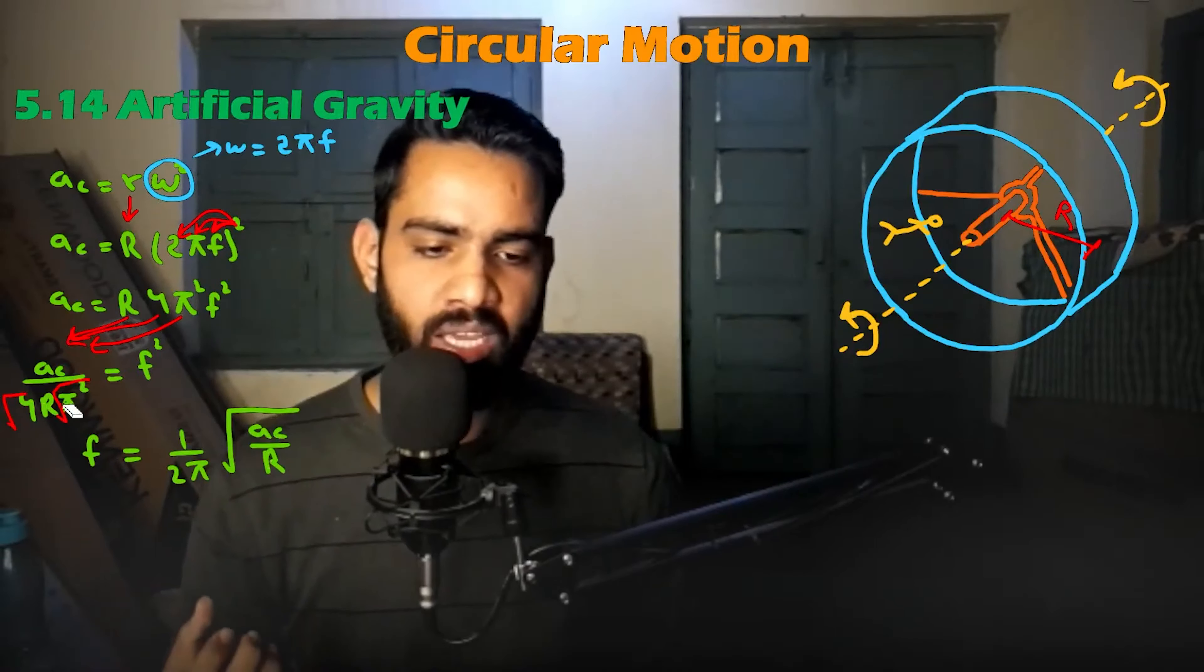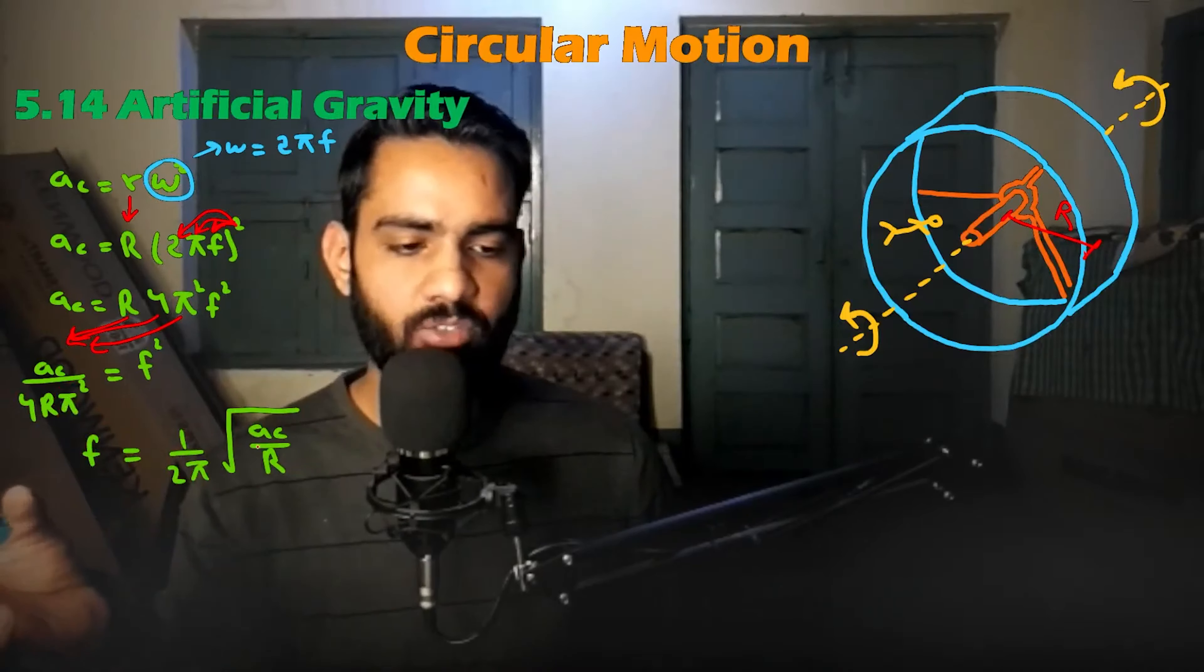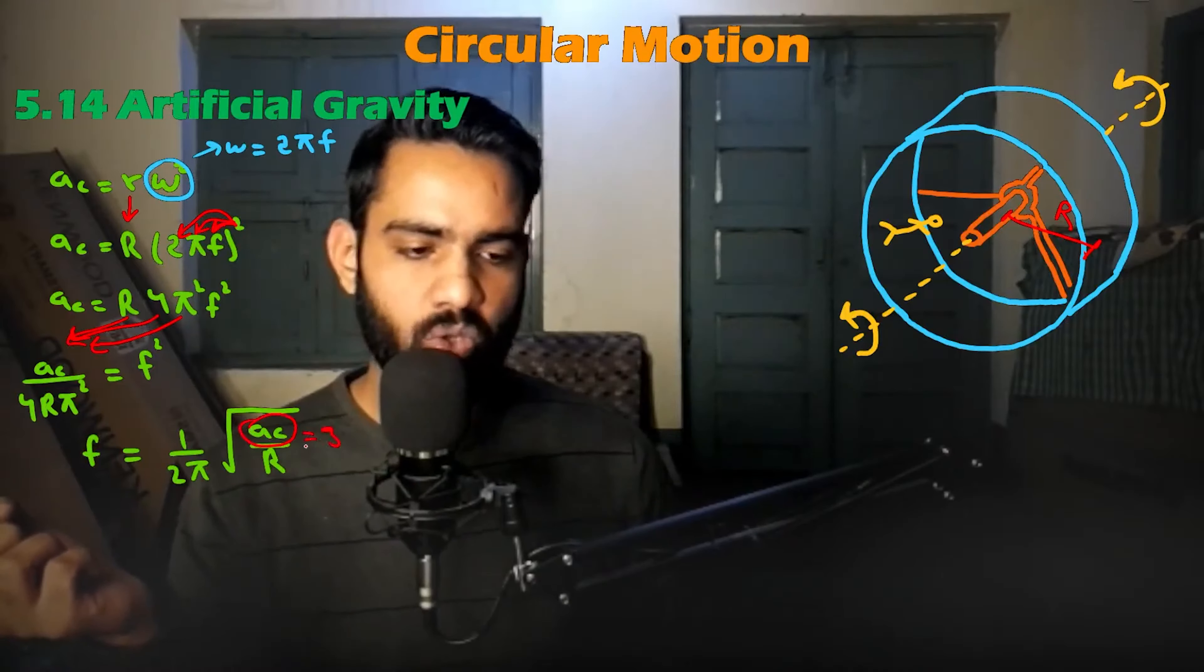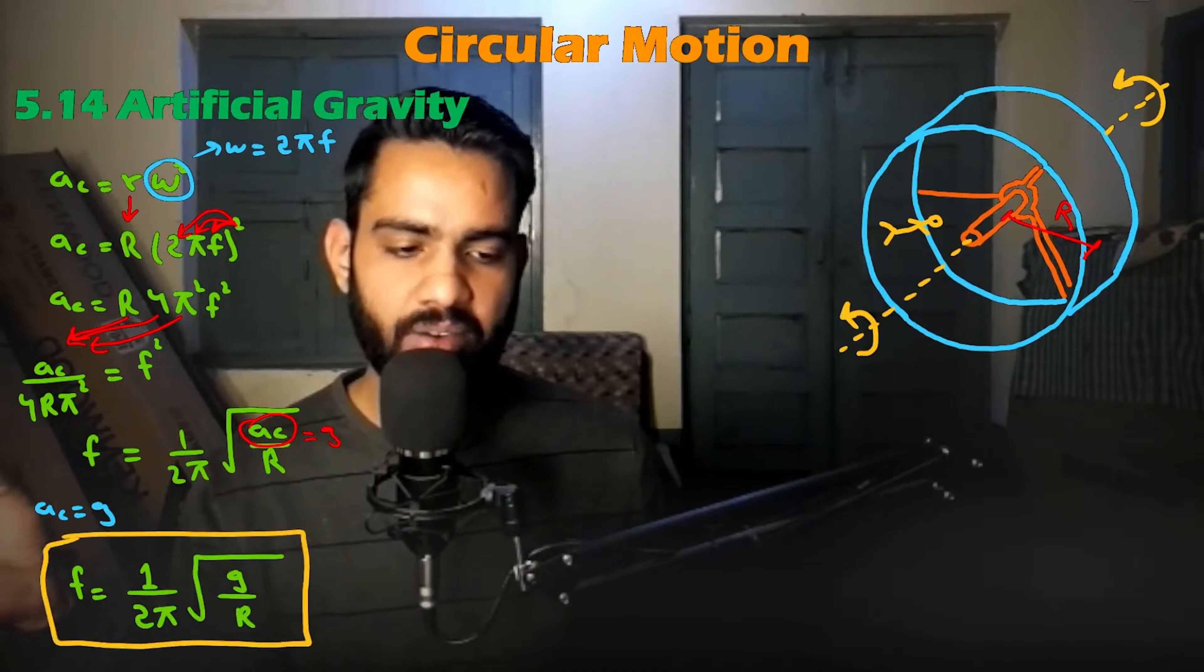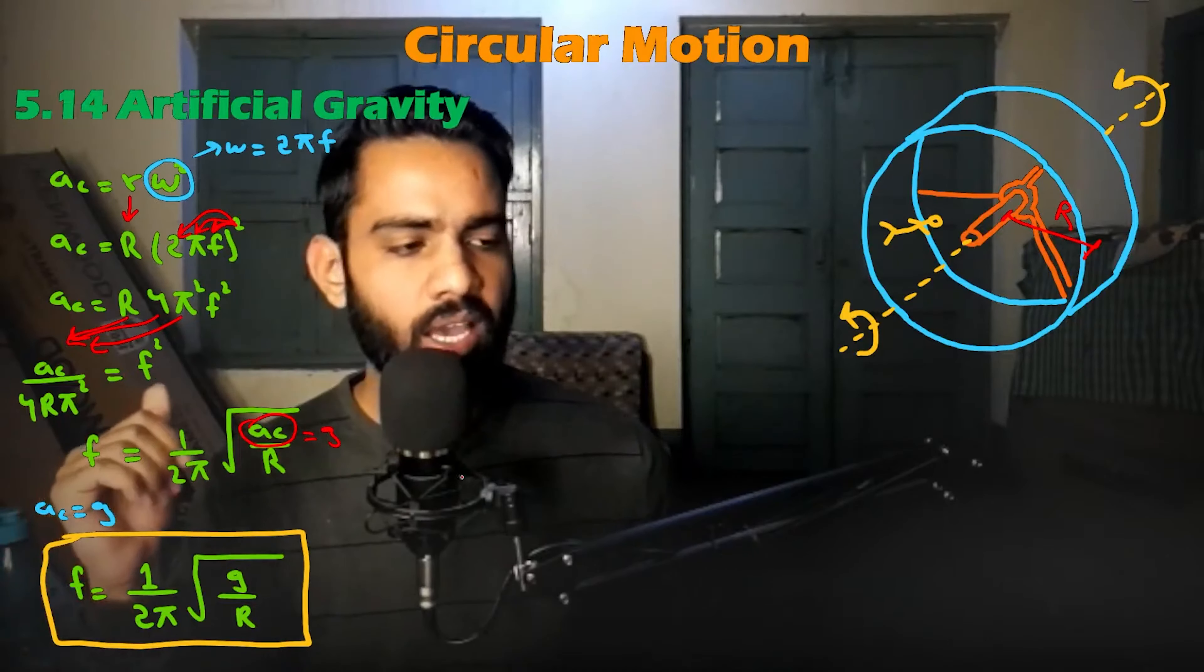Square root of pi squared gives 2 pi in the denominator. So frequency equals 1 over 2 pi times square root of ac divided by r. For example, if we have an ac value equal to g, then the frequency will be 1 over 2 pi square root of g divided by r.